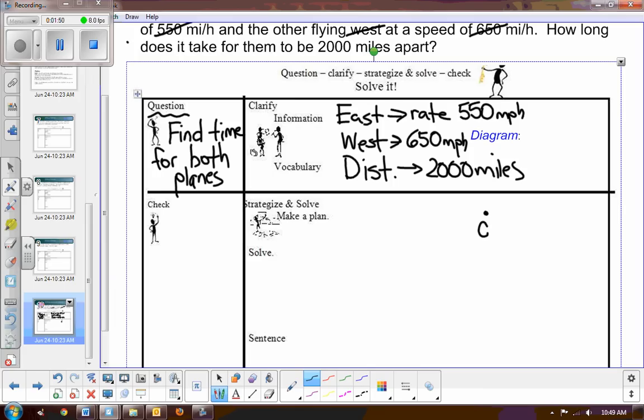So here's the big city of Chicago, and one is going east, here's my east plane, and then one is going west. And so now I'll label it, the east plane is 550 miles per hour, and the west plane is going a little faster, 650 miles per hour, so it's going to California, it's got some speed under it.